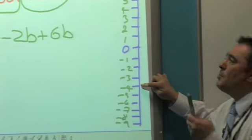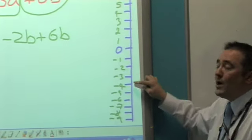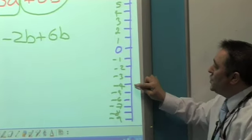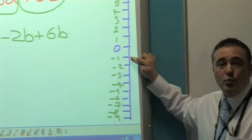So minus 4 plus 3. It's going to go towards 0. It's going to get warmer if you think of the temperature. So 4, 1, 2, 3, it's going to be minus 1.